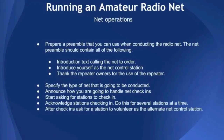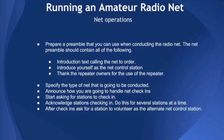After you read the beginning preamble, specify the type of net that's going to be conducted and set expectations about check-ins. On our net, we announce: 'This is a directed net. Do not list comments until instructed by net control.' Next, we announce how check-ins will be handled — first asking for anyone with priority information: 'Any station having priority information, please call net control now.' If anyone has priority information, we handle it at that point.